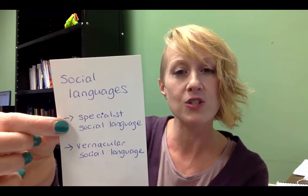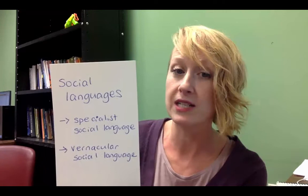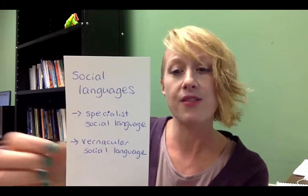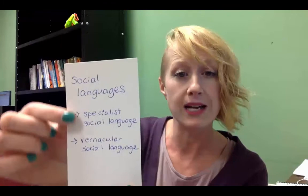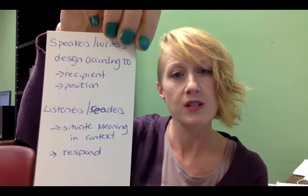Moving from that, he says we use language either in very specialist ways — language that only others within a specific discourse community or with similar identity would understand — or in this vernacular social language. Identity and social distance affect communication and discourse; they affect the language we choose to use. He says it's important to realize there are these different types of social languages. That actually encompasses the first eight bullet points he has. The key terms so far are identity, speakers and writers, listeners and readers, design, situated meaning, social distance, social significance, and social languages.